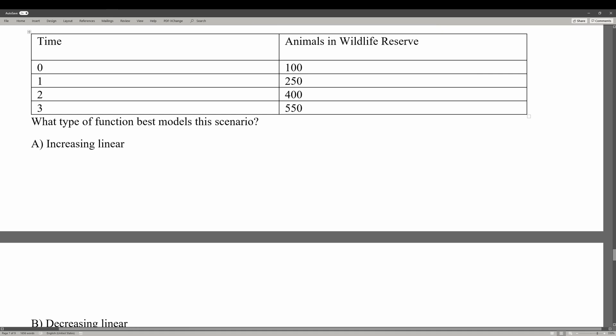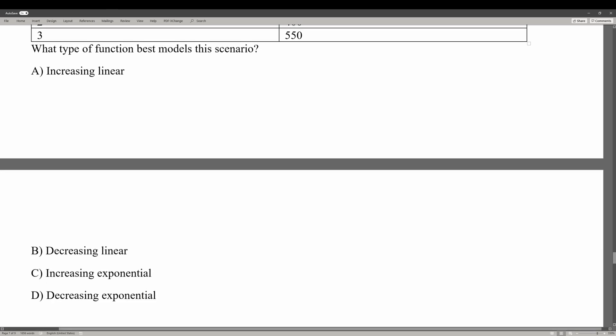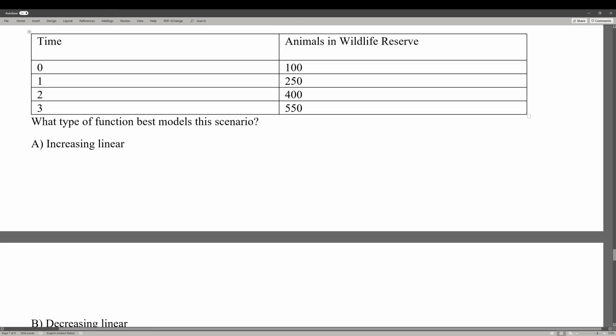Next we have a table which shows the time and the number of animals in a wildlife reserve. At time 0 we have 100 animals, at time 1 we have 250 animals, at time 2 we have 400, at time 3 we have 550. Which of the following functions best models this scenario? We're comparing linear and exponential functions. Linear functions increase or decrease by a constant rate, whereas exponential functions increase or decrease by a non-constant rate. We start off with 100, then increase by 150, then increase by 150 again, and lastly increase by 150. So we have an increasing linear function, since the number of animals is going up by a constant amount.